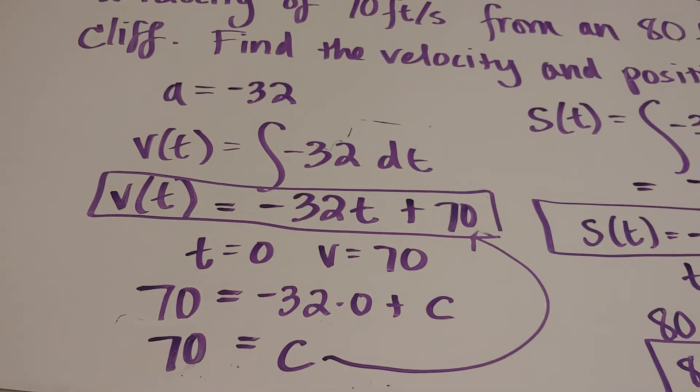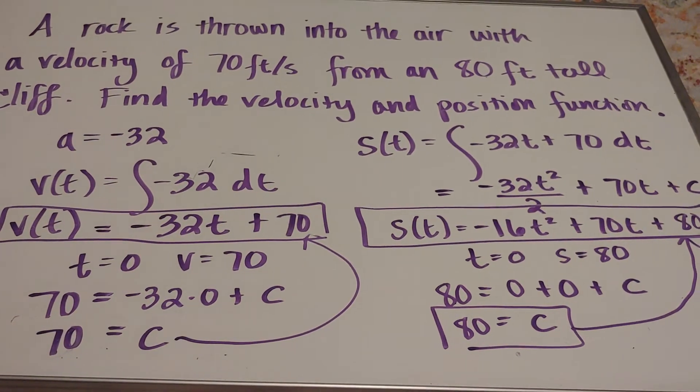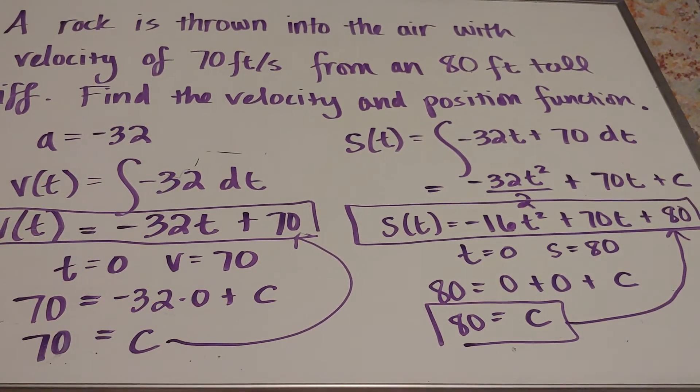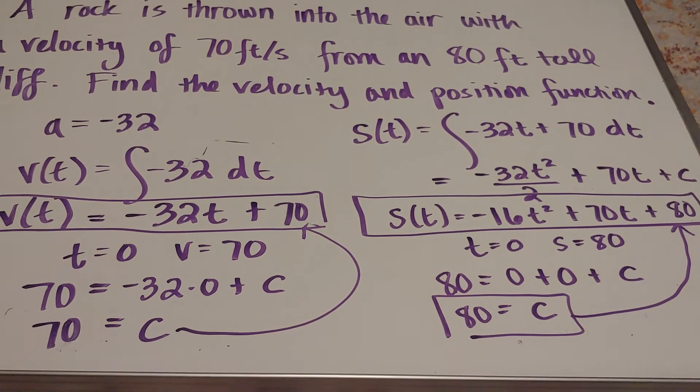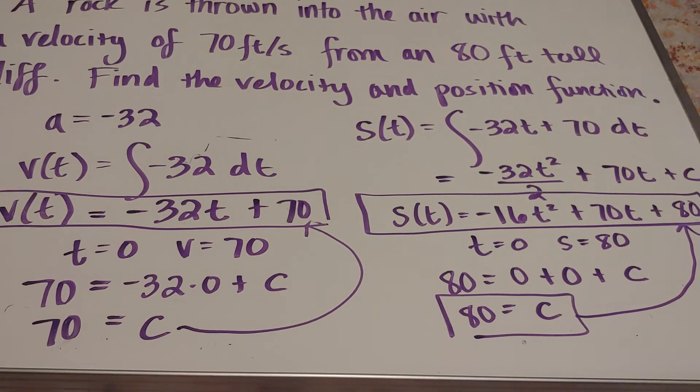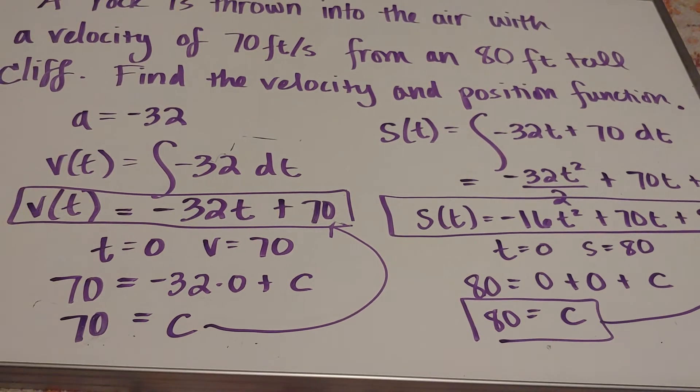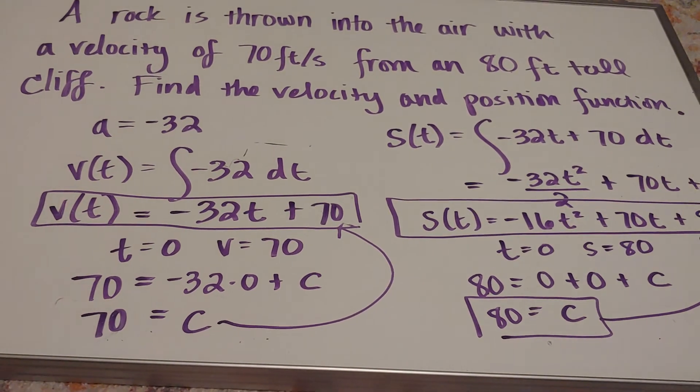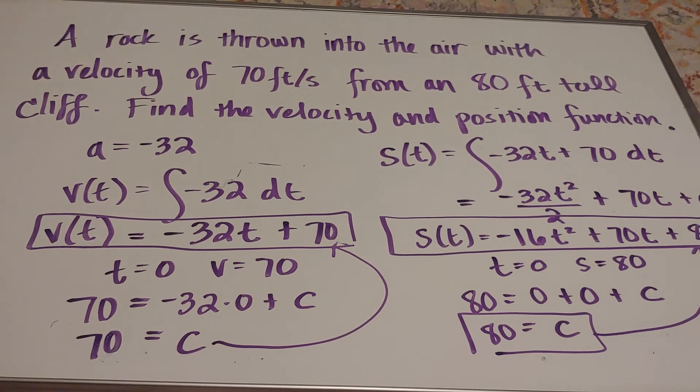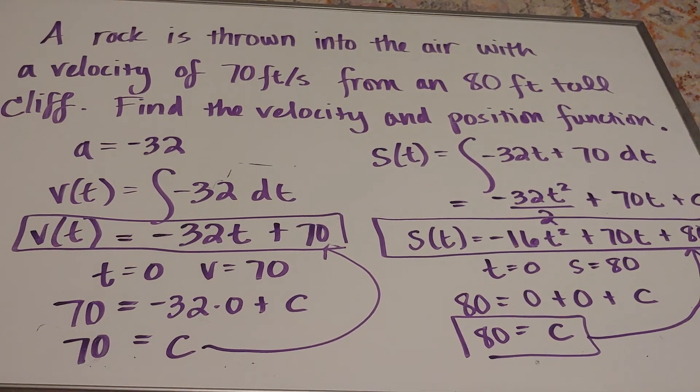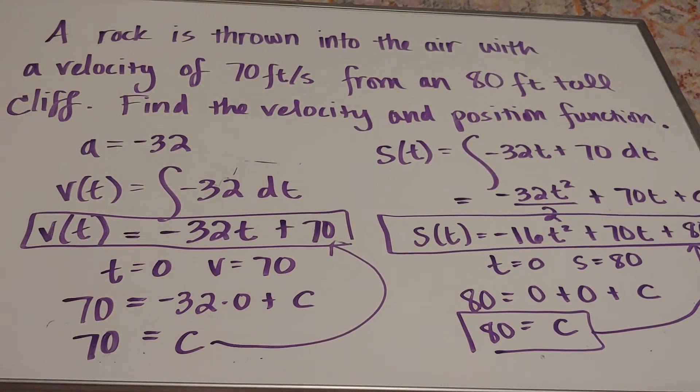That's my velocity function, and it all started just knowing gravity. Make sure that you use gravity as negative because it's acting in the opposite direction of what you're throwing your object. If this whole problem was in the metric system, I would have started off with negative 9.8 instead of negative 32. All right, good luck.